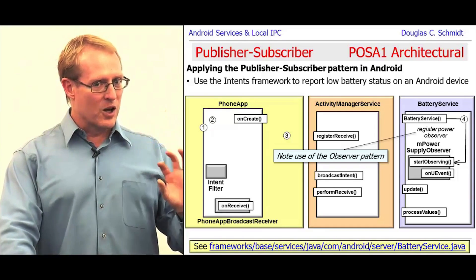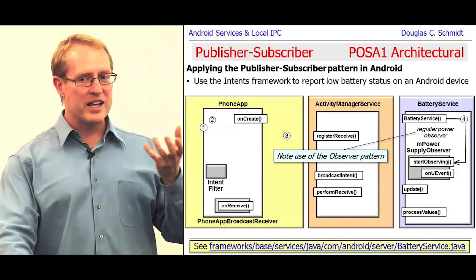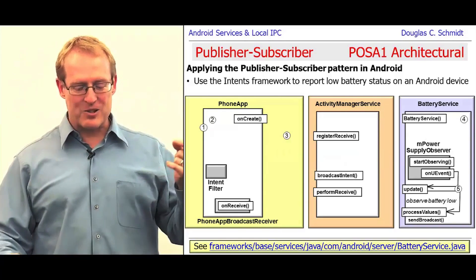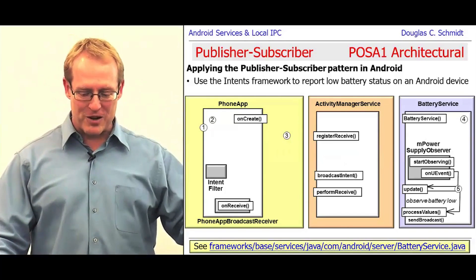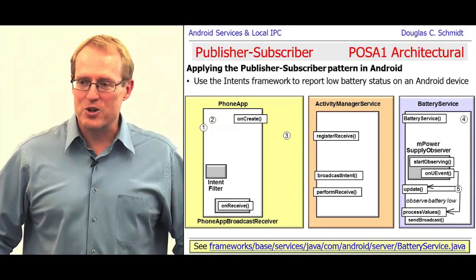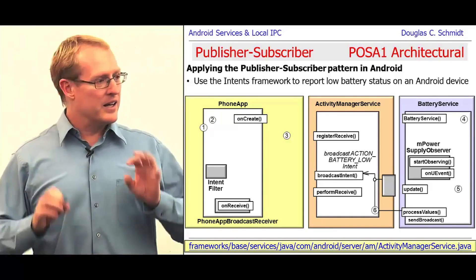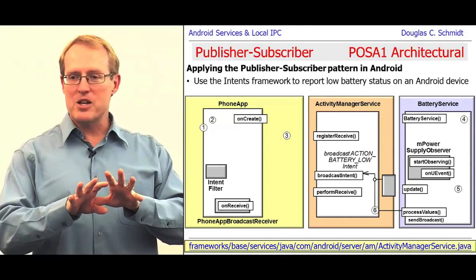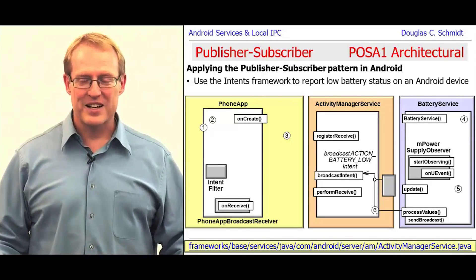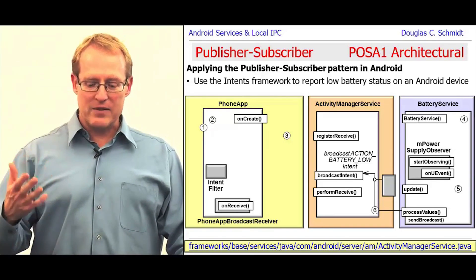When the low-level driver discovers that the battery is low, it calls back on the onUEvent callback method using the observer pattern. That turns around and calls the update method on the battery service. The update method calls the processValues method, which creates an action battery low intent and broadcasts it to anybody who cares. This ends up being sent to the Activity Manager Service.